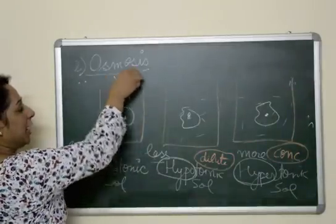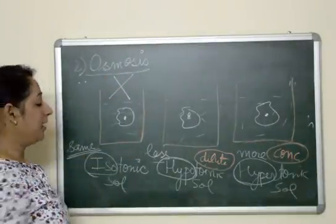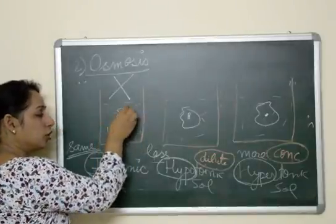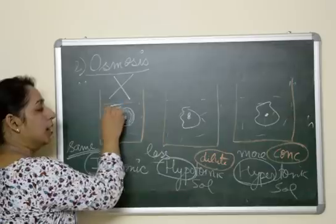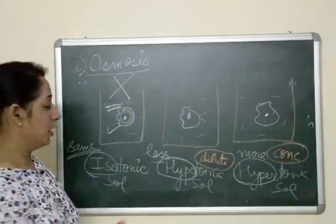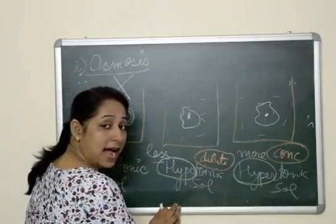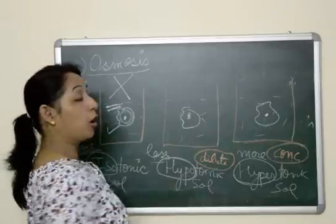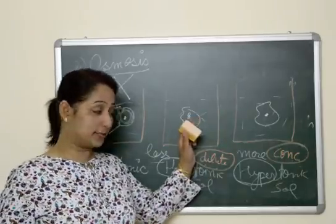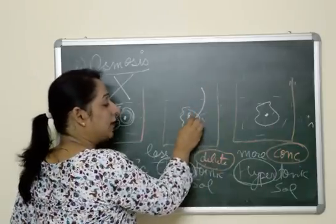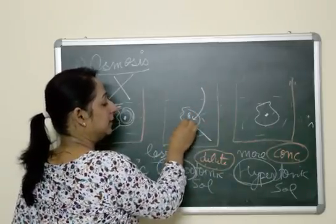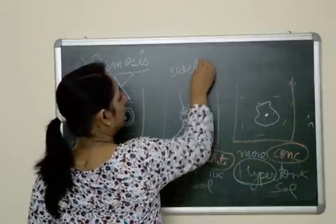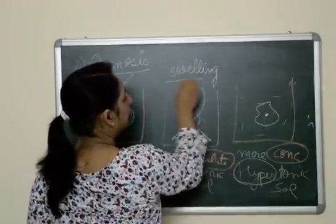In isotonic solution there will be no change, as the concentration of the cell and the solution are the same. When we place a cell in a hypotonic solution — where water outside is more and solute is less — the water inside the cell is less but outside is more. Water will start moving inside the cell, leading to swelling up of the cell — an increase in size.